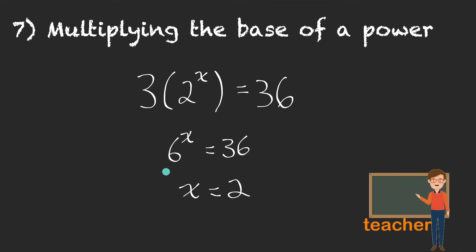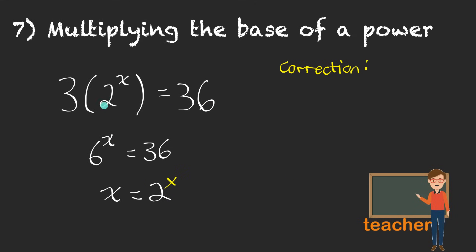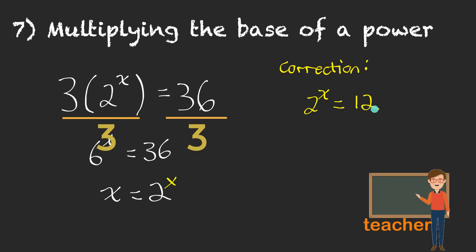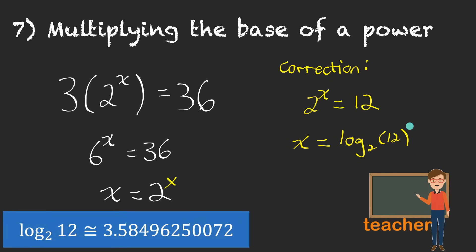Before I show you where the mistake in this question is, let me remind you that when solving equations, you can always check to see if your answer is right or wrong by plugging it into the original equation. If I plug 2 into the original equation, I'd have 3 times 2 squared. Does that equal 36? Well, 2 squared is 4. 3 times 4 is 12. 12 is not 36, so that shows you it's not the right answer. You can't multiply the base of a power by a constant. What we would have to do is divide both sides by 3 to start with, giving 2 to the power of x equals 12. We're looking for what exponent goes on 2 to get 12, and logarithmic functions can find us missing exponents. The exponent would equal log base 2 of 12.